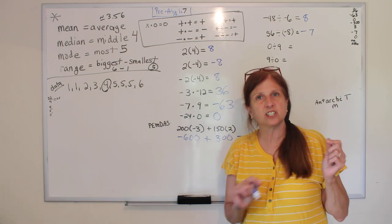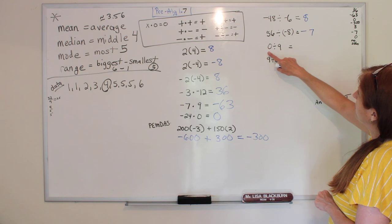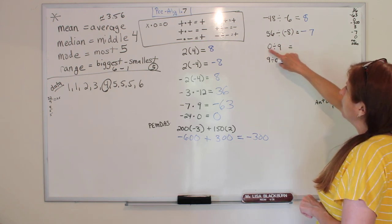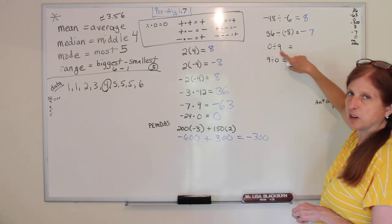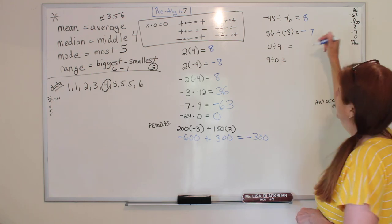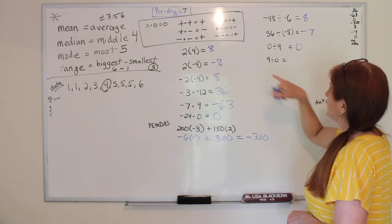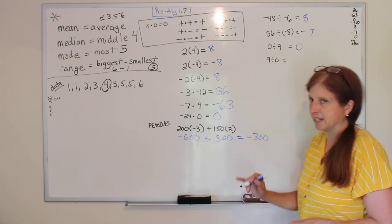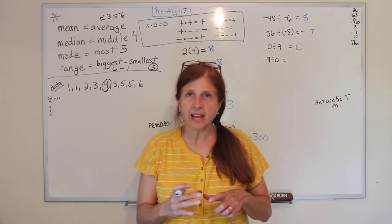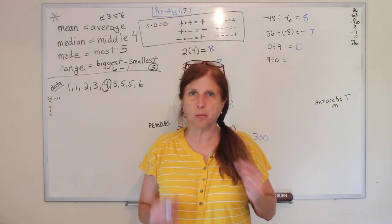All right, zero divided by 9. We have no cake and we're going to divide it between nine people. How much cake do we get? No cake.